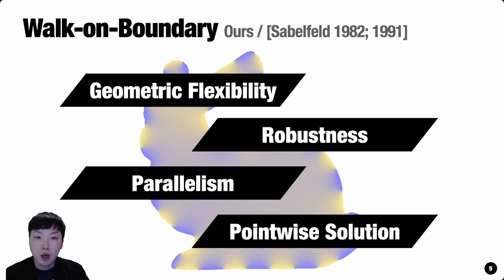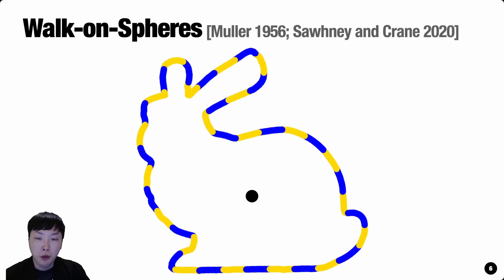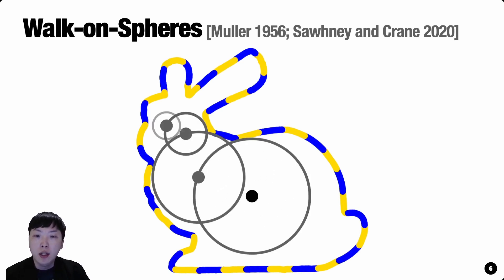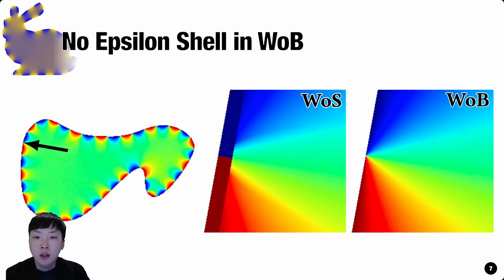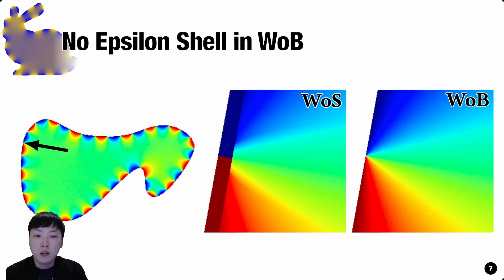Walk-On Boundary retains the favorable properties that the previous work, Walk-On Spheres Method, had. This includes the flexibility of geometric representation, robustness, parallel computation, and point-wide solution estimations, to name a few. However, the Walk-On Spheres Method and its family, including the concurrent work Walk-On Stars Method, used the closest point query to estimate the solution, and the mathematical basis is also quite different from rendering. Additionally, Walk-On Spheres introduces some non-negligible bias due to its epsilon-shell path termination strategy, and Walk-On Stars also inherits such an undesirable effect in some cases.